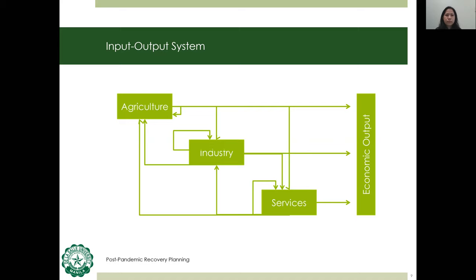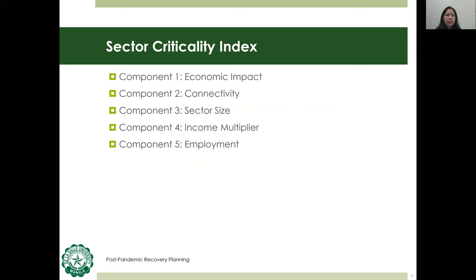The sector criticality index is composed of five components derived from the input-output framework. The first is the economic impact component — a combination of output multiplier and inoperability multiplier. The second is a measure of economic distance. The third accounts for the sector's contribution to the entire economy. The fourth is represented by the income multiplier. The fifth accounts for the number employed by the sector. Each component is computed for each sector, so an 11-sector economy yields 11 SCI values.